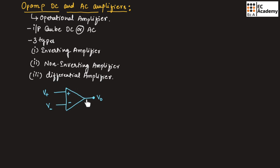An op-amp consists of three important terminals: two input terminals and one output terminal. It is having a plus sign and a minus sign. These polarities indicate the type of input terminals. Plus sign indicates the terminal is the non-inverting terminal. If the input is applied to the non-inverting terminal, output will be non-inverted, which means output will be in the same phase as the input. And if the input is applied to the inverting terminal, the output will have a 180-degree phase shift with respect to the input.